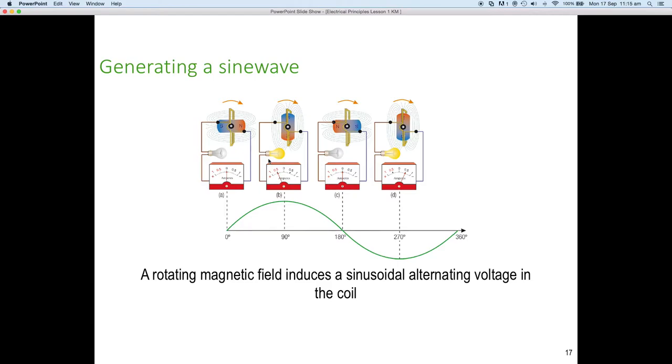If we now rotate our magnetic field, so we have the south pointing up and the north pointing down, we've got the maximum amount of flux cutting the inductor at the top and at the bottom. So, you can see here our ammeter has deflected, in this case, to about half an amp in the positive direction. Our light globe is glowing nice and brightly, and we've rotated up to the middle of the waveform. So, we've rotated to 90 degrees.